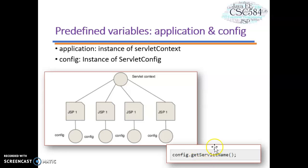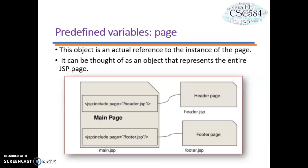Here are examples of how we use the Config object in a JSP page — we use config.dot with methods supported by the javax.servlet.ServletConfig interface. Now let's look at the predefined variable Page. This object is an actual reference to the instance of the page and can be thought of as representing the entire JSP page. For example, we use it like: jsp:include page, providing the URL of the page itself — such as the header and footer for the main page JSP.